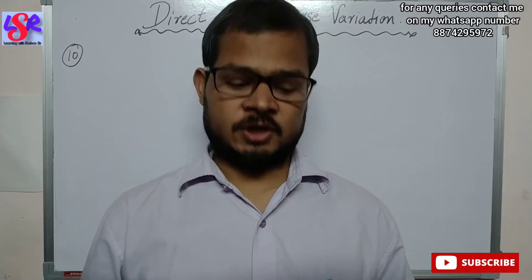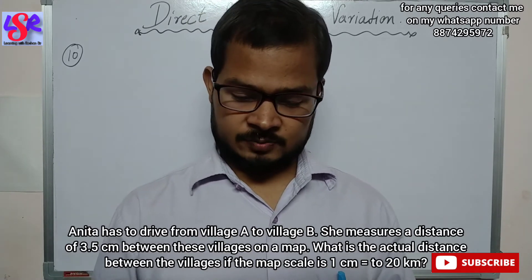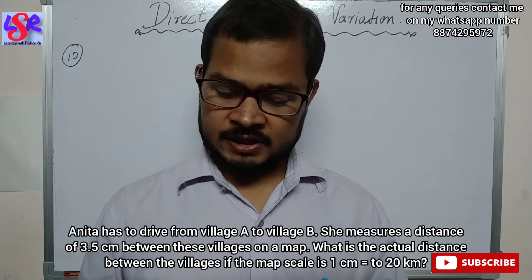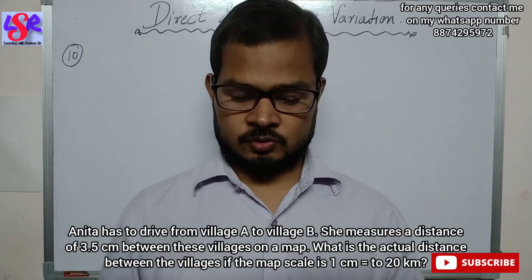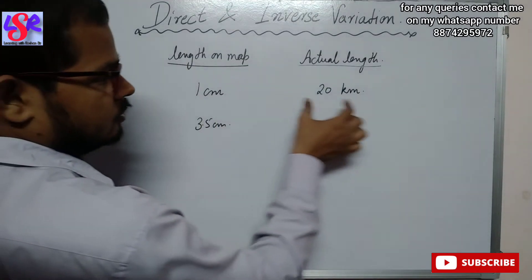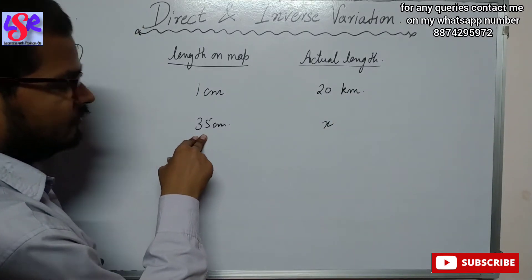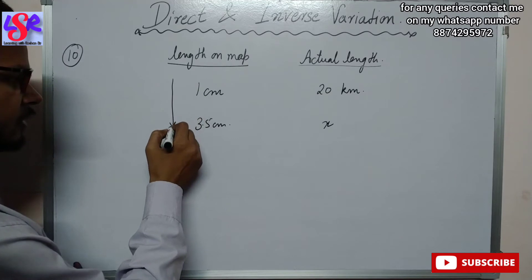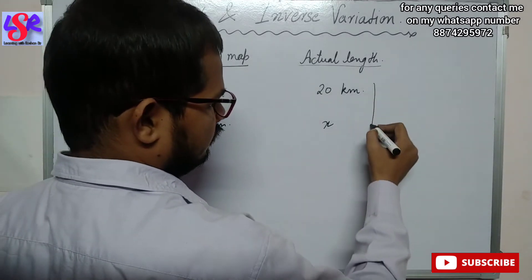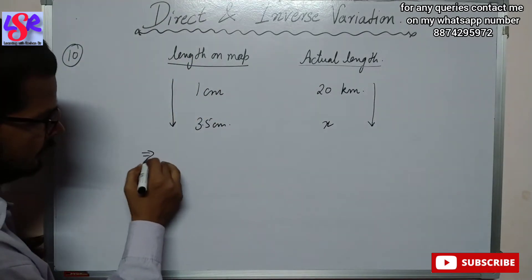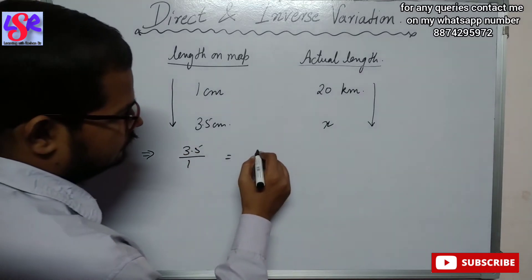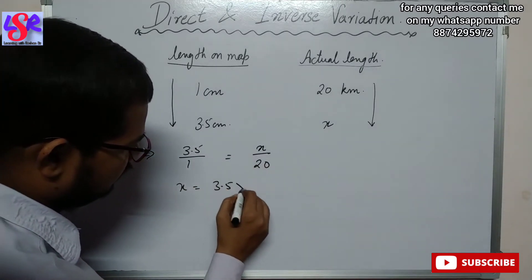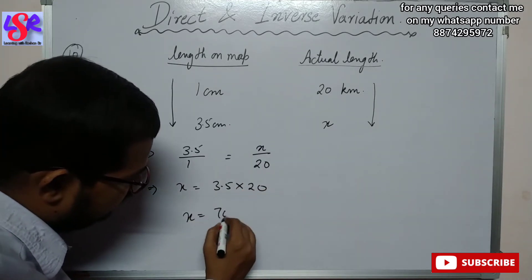Now let's do question number 10. Anita has to drive from village A to village B. She measures a distance of 3.5 centimeter between these two villages on the map. What is the actual length between the villages if the map scale is 1 centimeter equals to 20 kilometers? This is a direct variation. We write 3.5 upon 1 equals to x upon 20. Cross multiplying, x equals to 3.5 into 20, that is x equals to 70 kilometers.